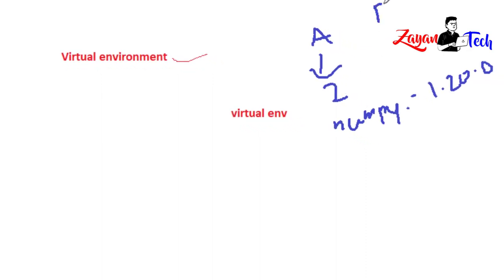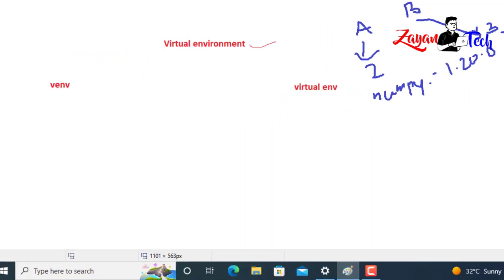At the same time you have another project, project B, where you need Python 3 and a different version of NumPy - the latest version or some older version, whichever your requirement. So on the same system, same laptop, two different projects can use two different Python interpreters and different package versions. This can be done with the help of a virtual environment.